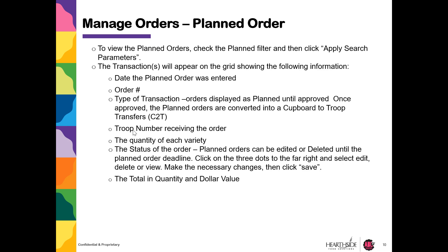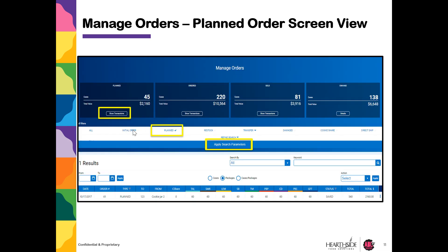Planned orders can be edited or deleted until the planned order deadline. Click on the three dots to the far right and select Edit, Delete, or View. Please note that once a planned order is approved, it is converted into a Covered to Troop Transfer. This is how you can look at the planned orders in your grid.